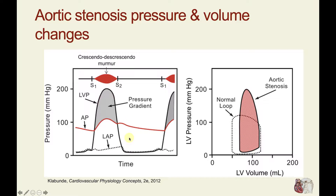What about the murmur associated with this? Murmurs are caused by turbulent flow. Turbulence occurs when blood starts to be ejected into the aorta. Initially the pressure gradient is rather low and it starts to build during ejection. The velocity is increasing more and more, producing more and more turbulence up to a peak level. This band here is showing a crescendo and decrescendo type of murmur.